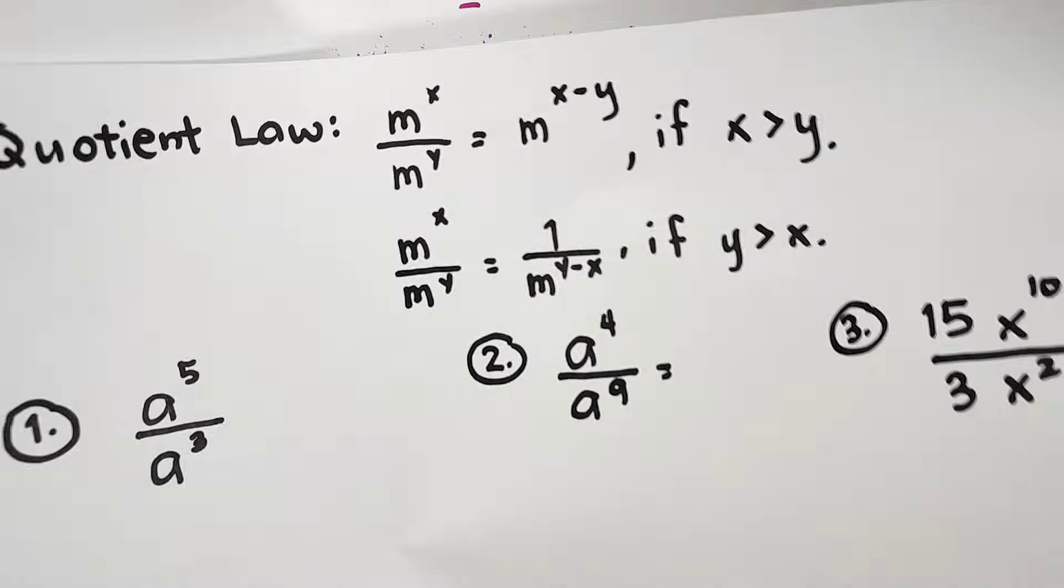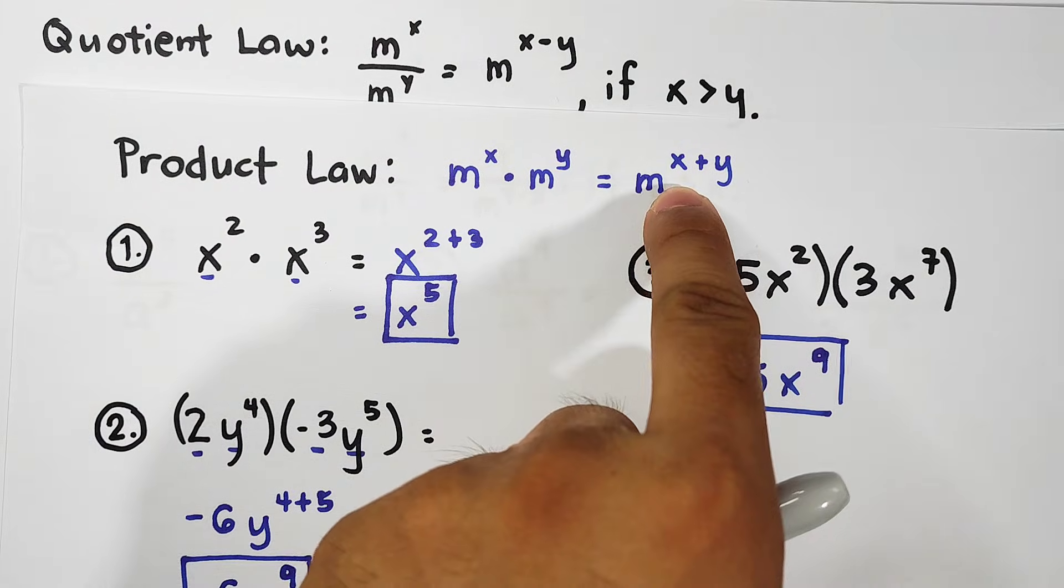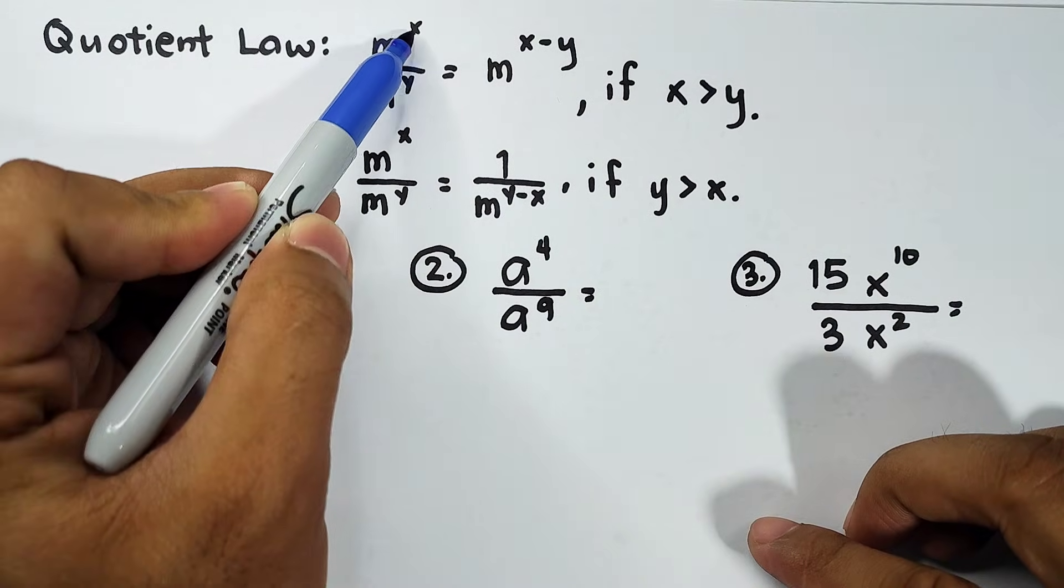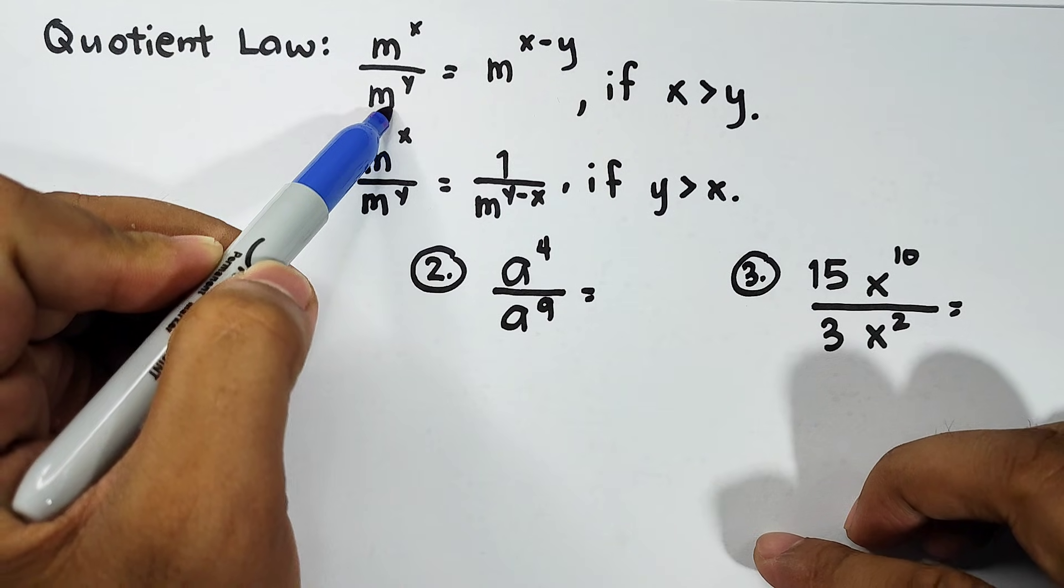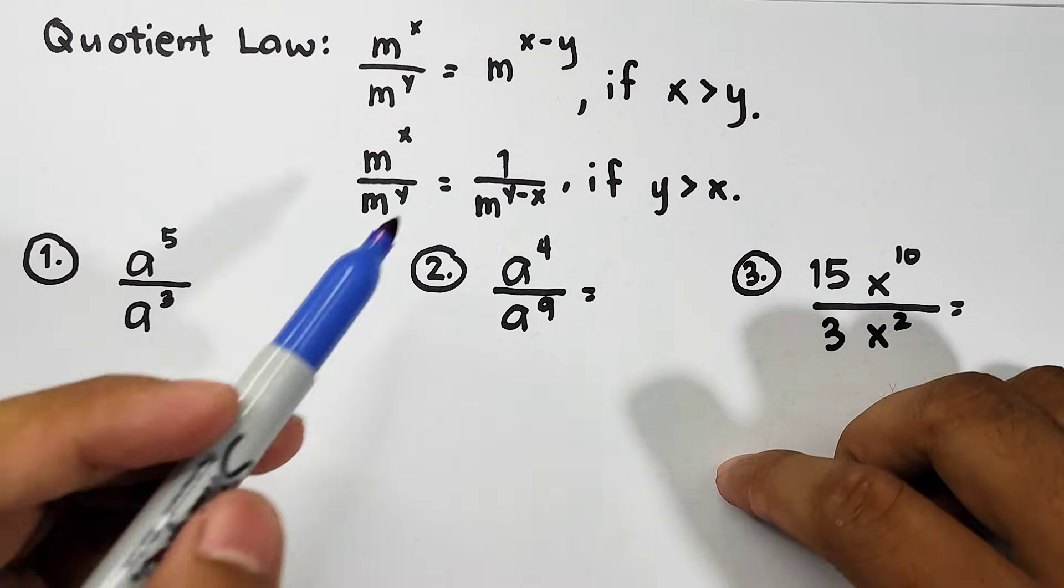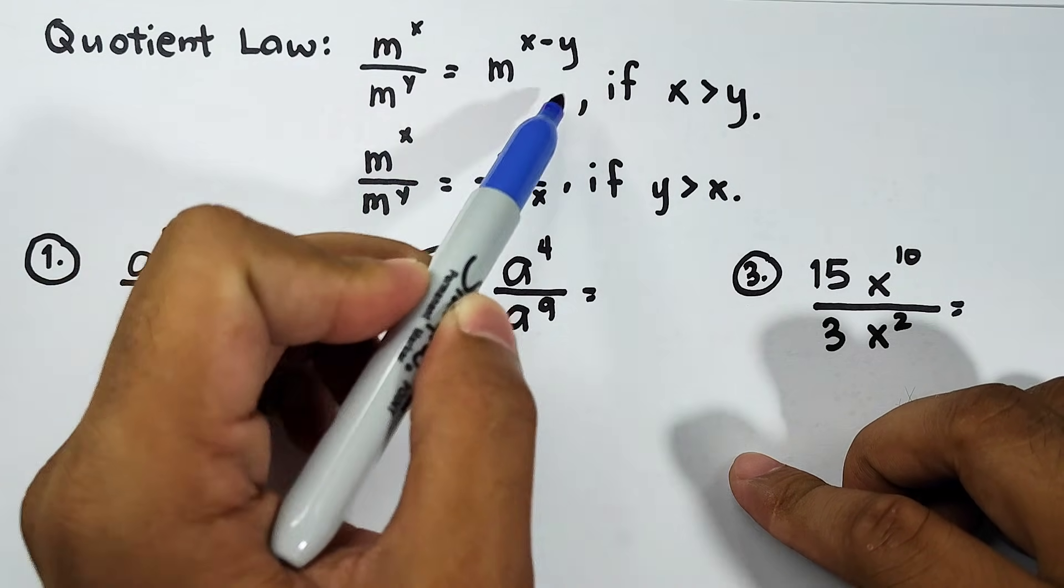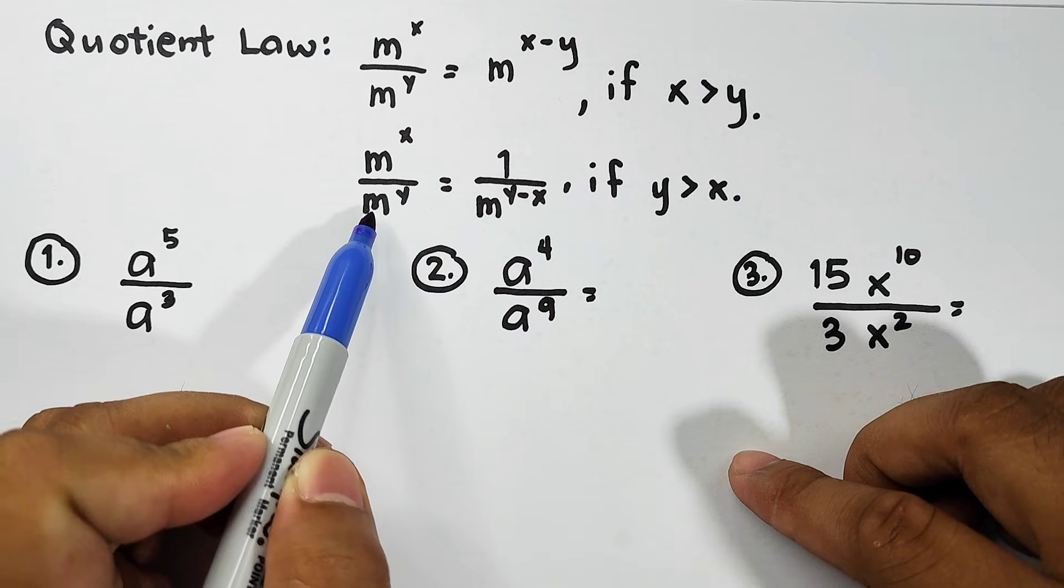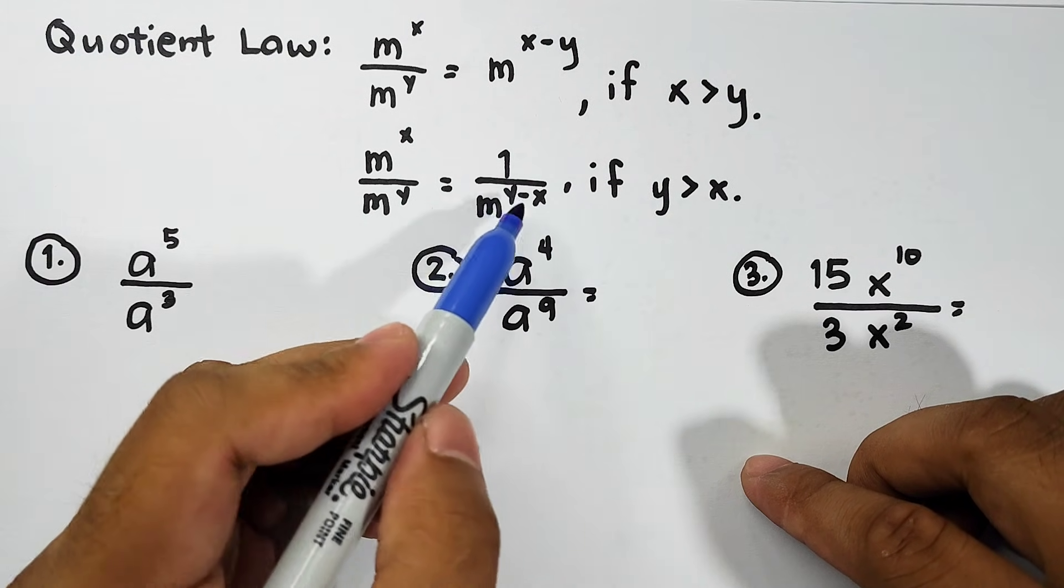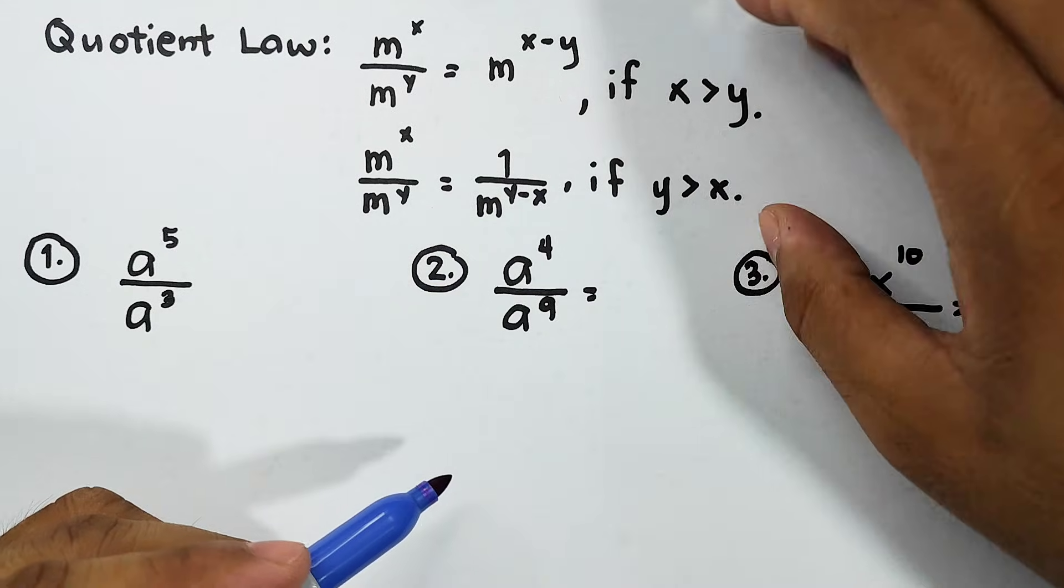So, let's have the quotient law. For the quotient law, this one is quite the opposite of the product law. In product law, we are adding the exponents, right? Now, for the quotient law, what we have here, if we have m raised to x over m raised to y, that is equal to m raised to x minus y. We are subtracting exponents. And then, this is the case. If your exponent x is greater than the exponent y, this will be the format. Because the next format is this. There's a case where the value of y is greater compared to x. So, the format will be 1 over m raised to y minus x. So, for you to understand well about this law, let us have number 1.